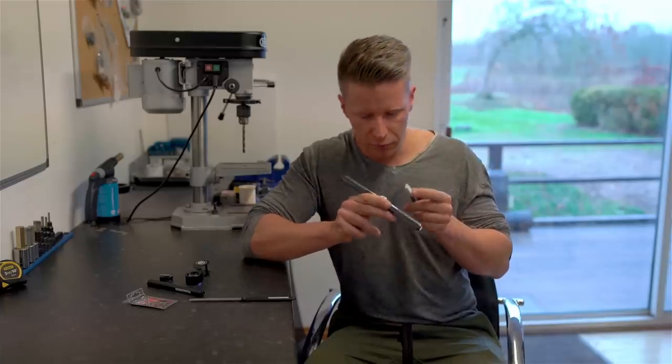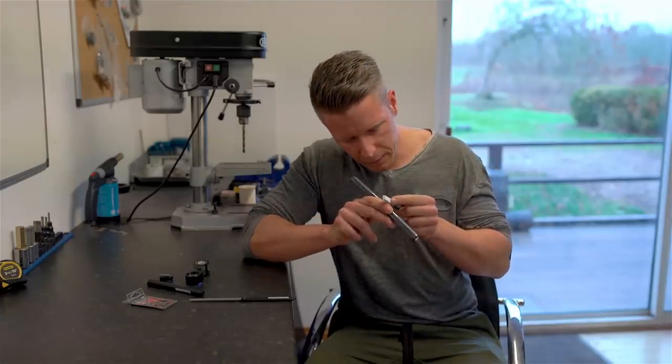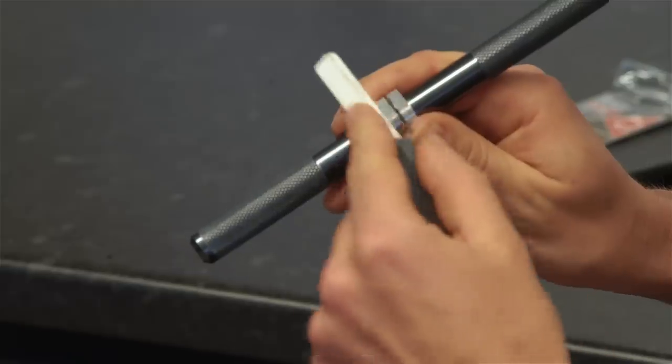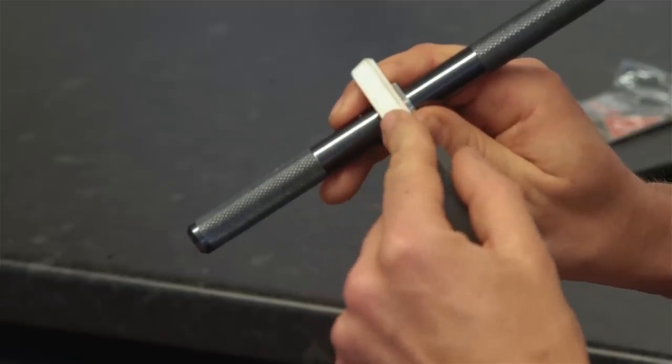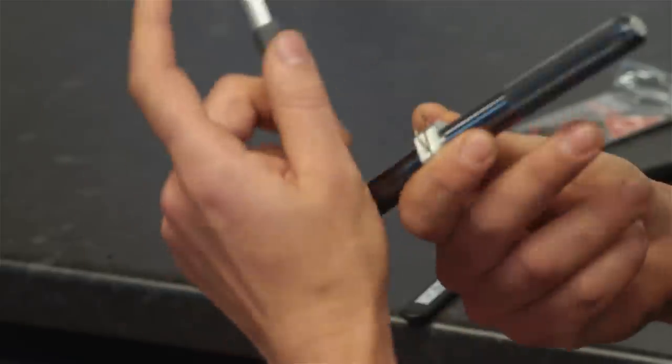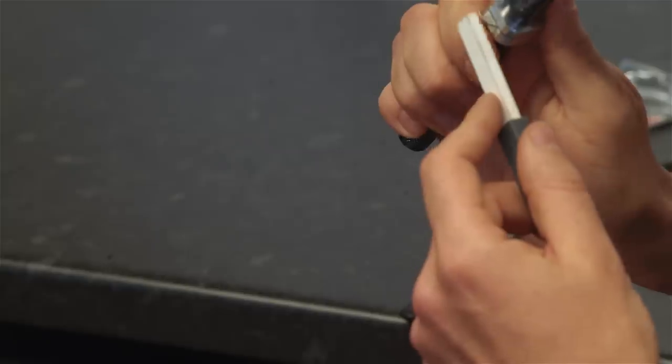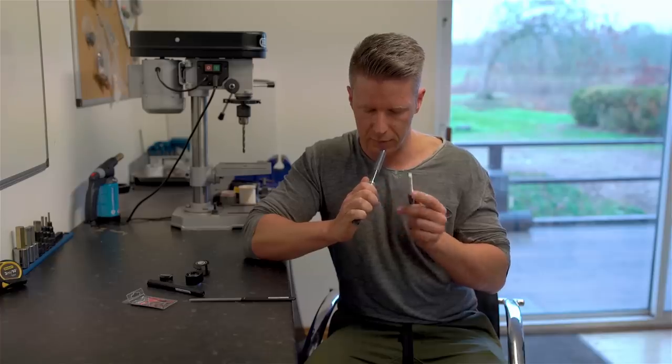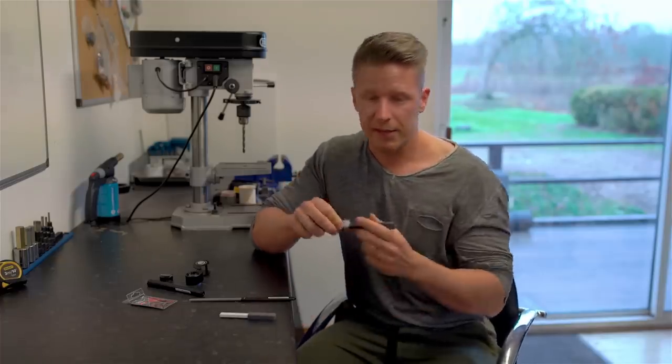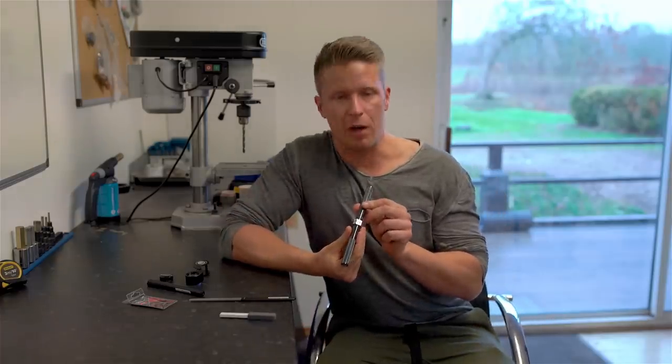Again I turn it round towards me so I can work the other side properly, and in the very end I just run it over the outside of the hook. So that's basically a sharpened hook.